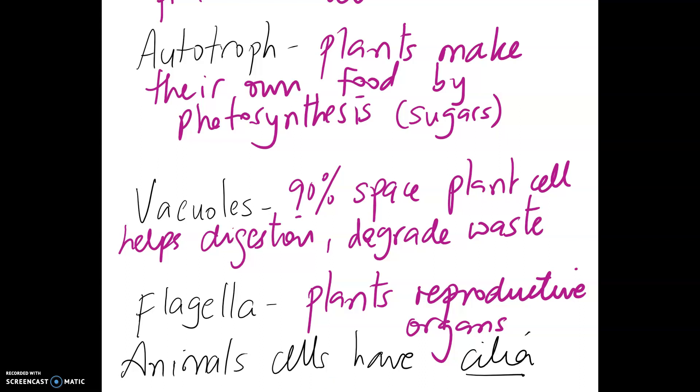Animal cells also have lysosomes, which are used for cell processes. So this was a very quick snapshot of the similarities and differences between a plant and animal cell.